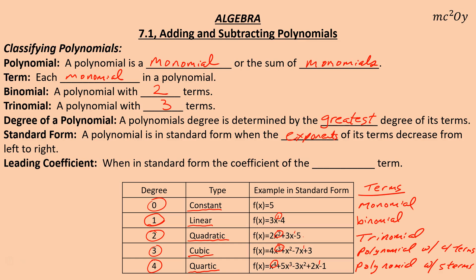The leading coefficient — remember, coefficient is the number in front of a variable. When in standard form, the coefficient of the first term is called your leading coefficient. For instance, the leading coefficient here would be four. So, LC for that one is four, leading coefficient two for the next, three, five, and if there's no number written, that means it's one.